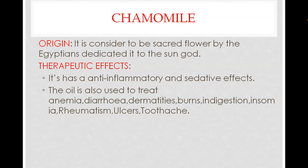Chamomile is considered to be a sacred flower by the Egyptians, dedicated to the Sun God. Just as we worship a tulsi leaf or the basil plant, in Egypt they use this chamomile and consider this chamomile flower as a holy plant, dedicating it to the Sun God.